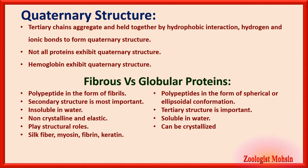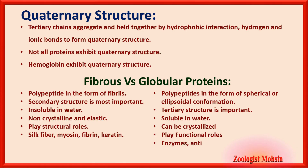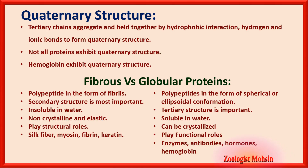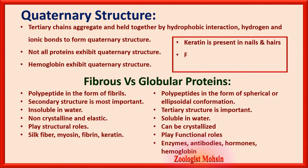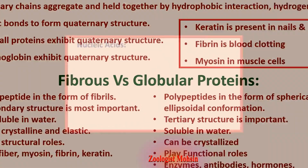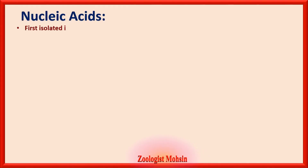Globular proteins play functional roles, and examples include enzymes, antibodies, hormones, and hemoglobin. Keratin is present in nails and hair. Fibrin is involved in blood clotting. Myosin is found in muscle cells.